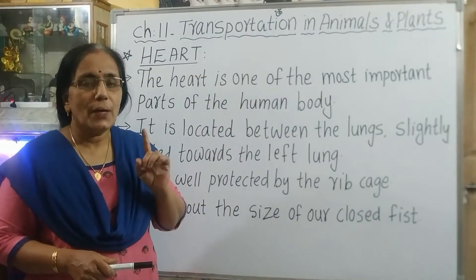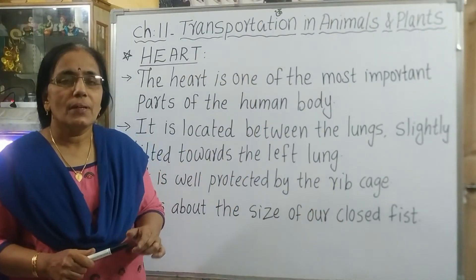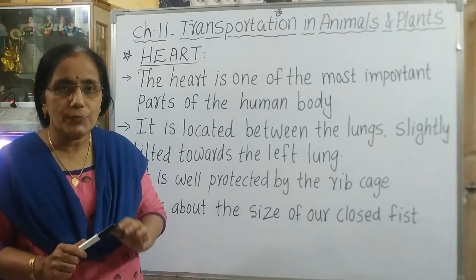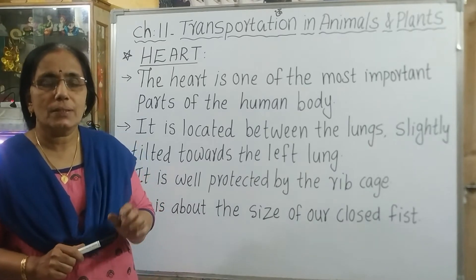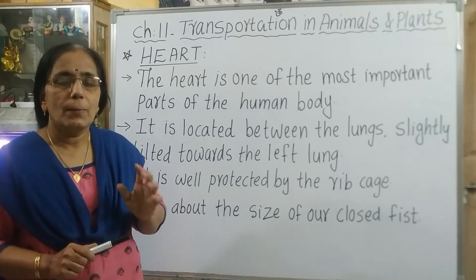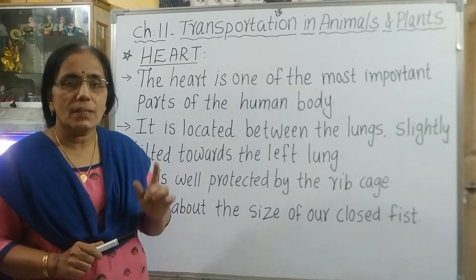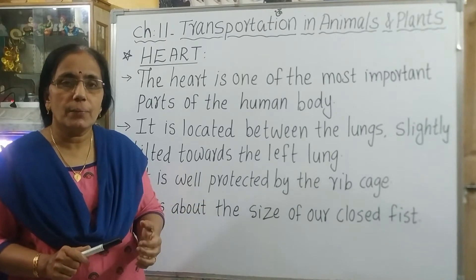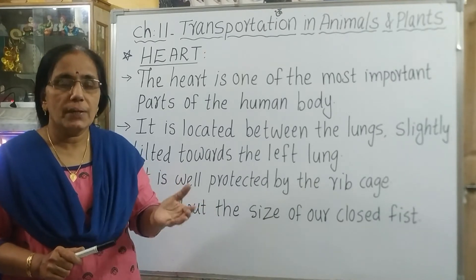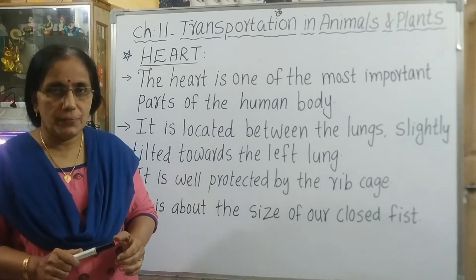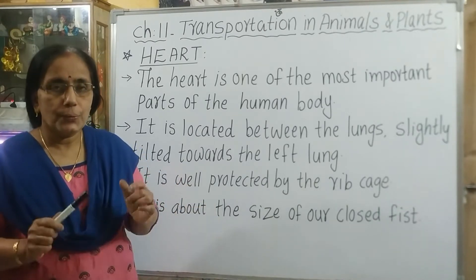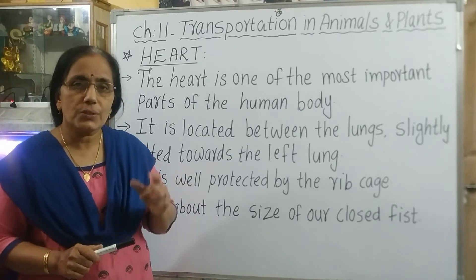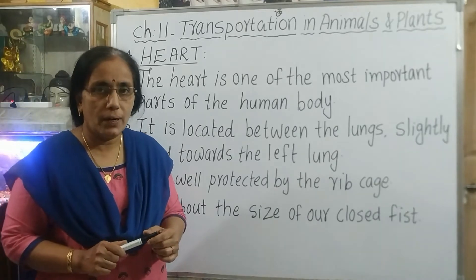Students, now you know that the circulatory system consists of three components: blood, blood vessels, and heart. We have already learnt about blood and blood vessels. Today, we will discuss about the structure of heart.